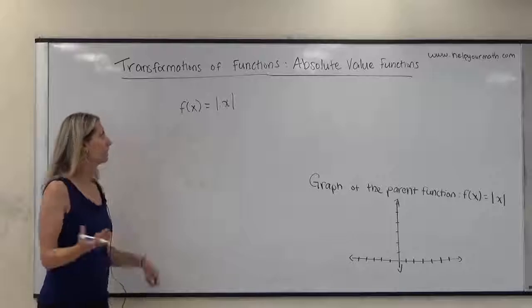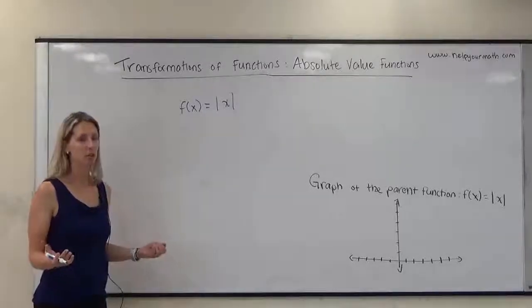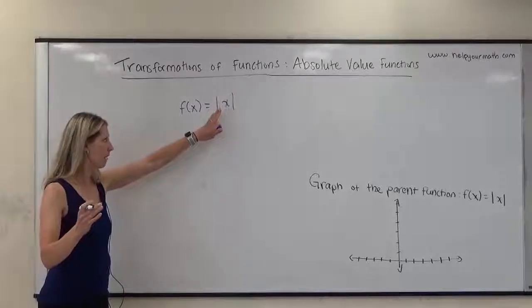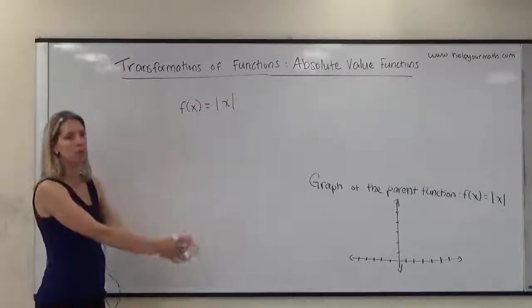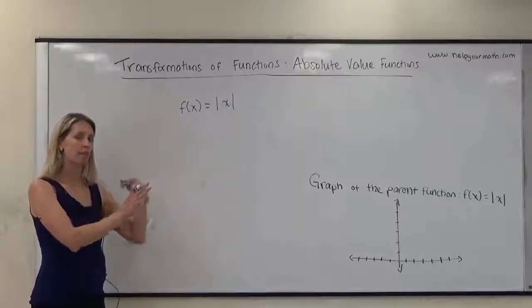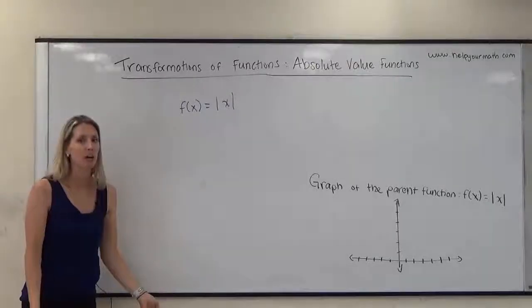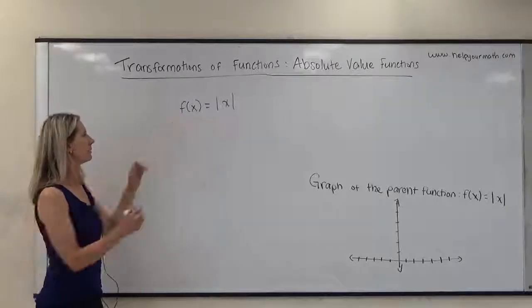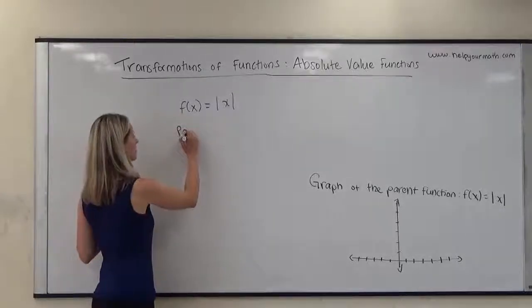In a previous video I talked about different types of transformations that we can have on functions. This is the basic absolute value function, and then we can do things to it that will change its location — it might shift it in the coordinate plane, flip it upside down, or stretch and shrink it. But this is what's called the parent function for absolute value functions.